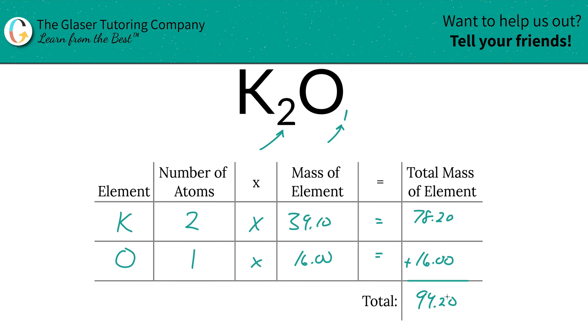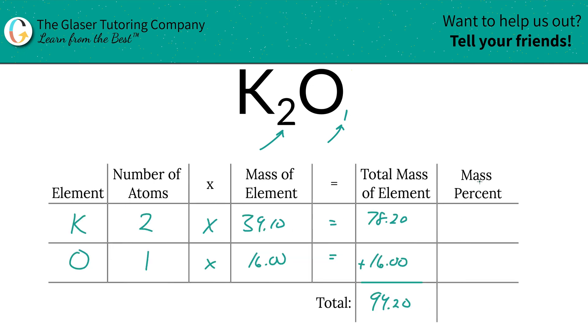Now that we've found that total mass, we're going to add a column to the table. Calculating the percents here are going to be easy as pi. Mmm, pi. Bam.